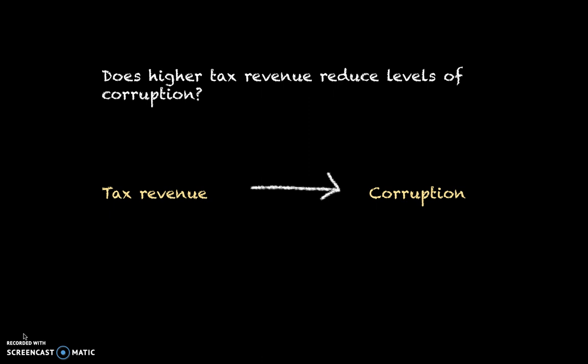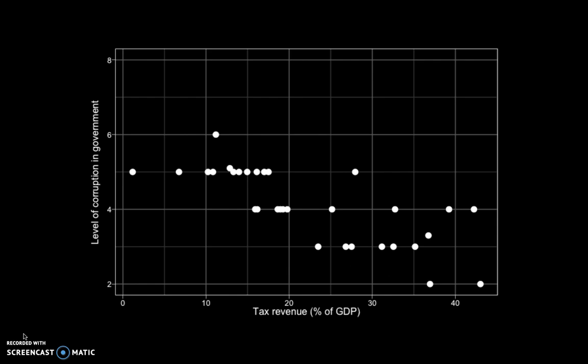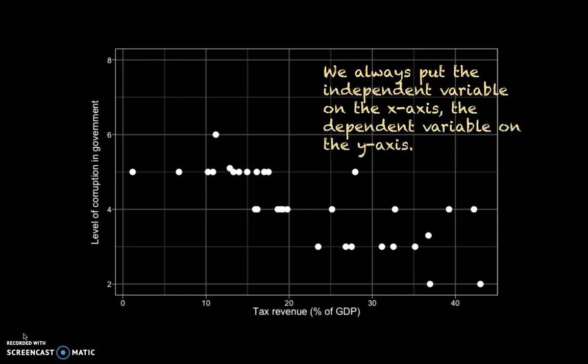So we can plot this data first using a scatter plot. The scatter plot is a typical plot to use for two continuous variables, as we have here. On the x-axis we have tax revenue, and on the y-axis the level of corruption in government. We always do this — the independent variable on the x-axis, the dependent variable on the y-axis. This is convention, so this is how people will read your plot. It also helps for regression analysis, where it makes a difference what is on the x-axis and what is on the y-axis.